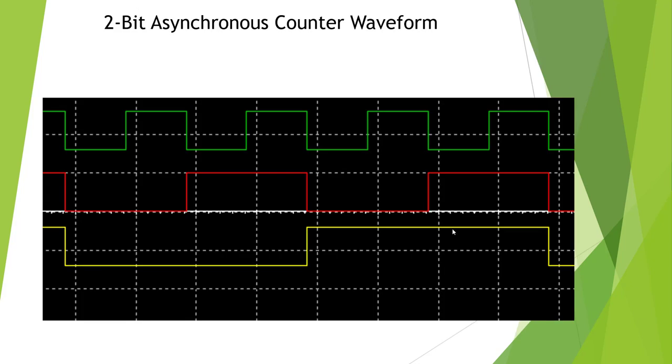Here is the two-bit asynchronous counter. It's the same output as the synchronous. The only difference is there's a little delay here, which I'll cover in a bit, but basically the same as the synchronous counter.